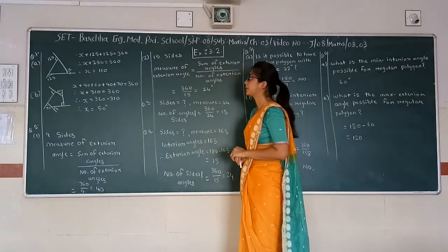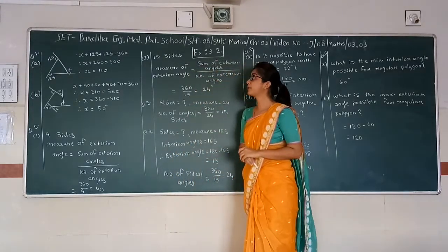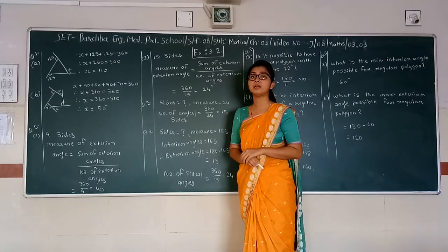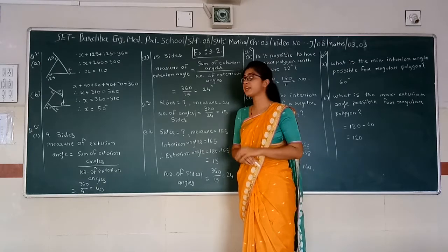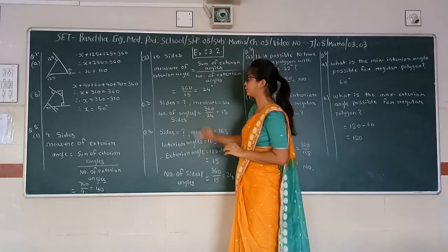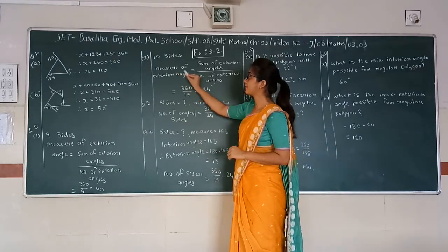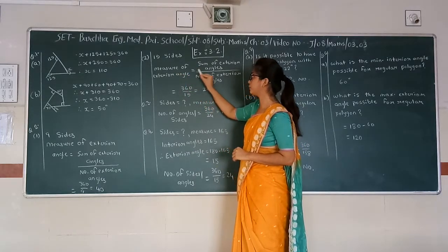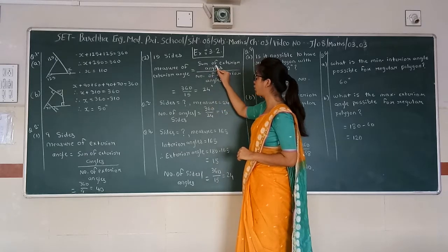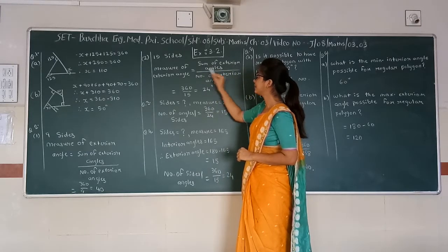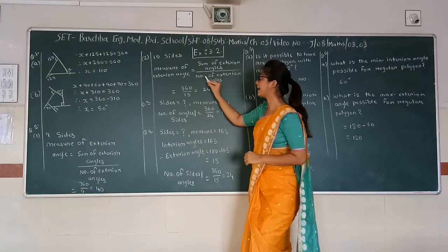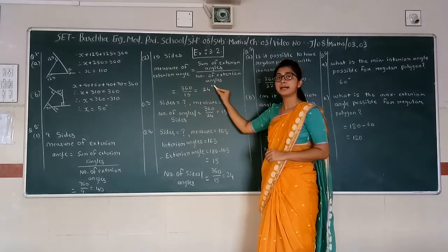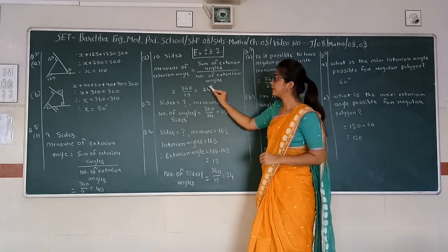Next, we have to find the measure of an exterior angle of a regular polygon with 15 sides. The measure of an exterior angle is equal to the sum of exterior angles divided by the number of exterior angles, which is 360 divided by 15, giving 24.